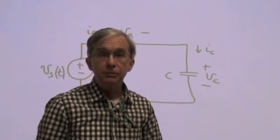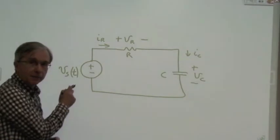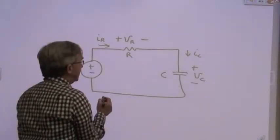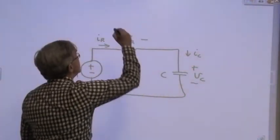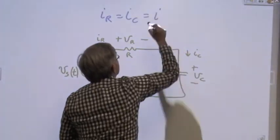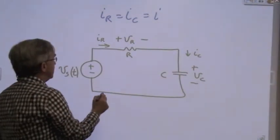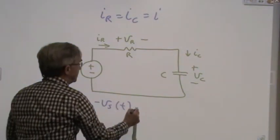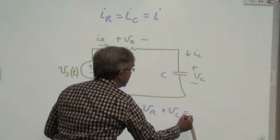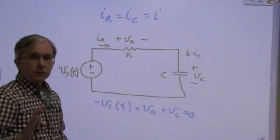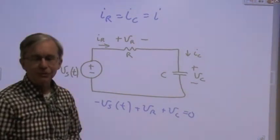So I have a circuit drawn here. We have a resistor, a capacitor, and a time-varying voltage source. Now, by Kirchhoff's current law, we can say that IR is equal to IC, just call that I. By Kirchhoff's voltage law, we can say that minus Vs plus Vr plus Vc is equal to zero. Those are the connection constraints, Kirchhoff's current law and Kirchhoff's voltage law.